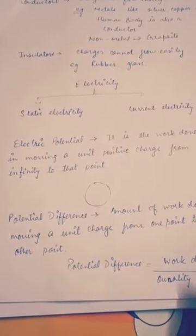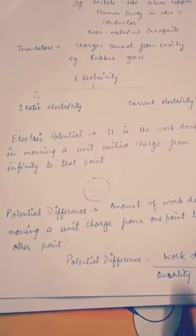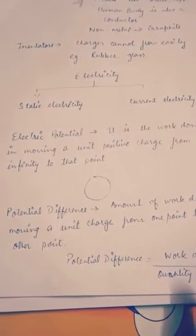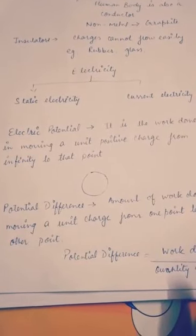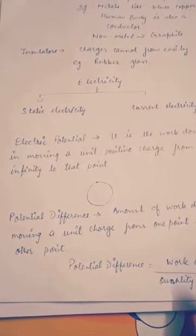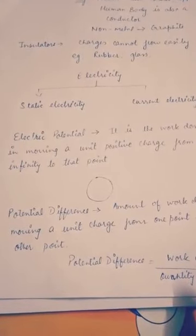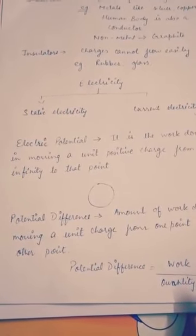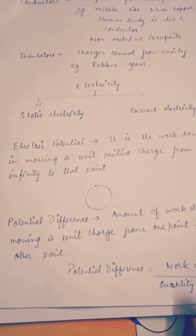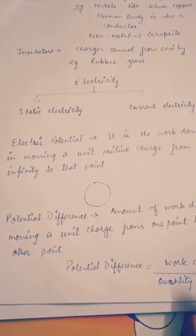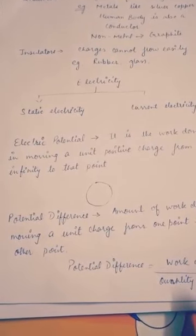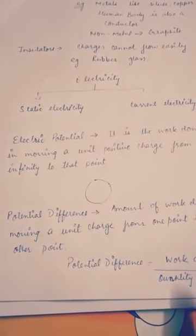Now coming to insulators — the charges cannot flow easily through them. For example, rubber, glass, and paper; charges cannot flow through them easily. So these are known as insulators. In short, substances through which charges can flow easily are conductors, and through which charges cannot flow easily are insulators.